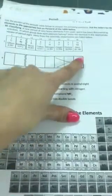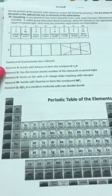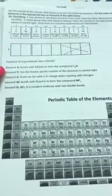So you just have to do these first five and you can cross out those last three. Element A bonds with lithium to form the compound LiA.